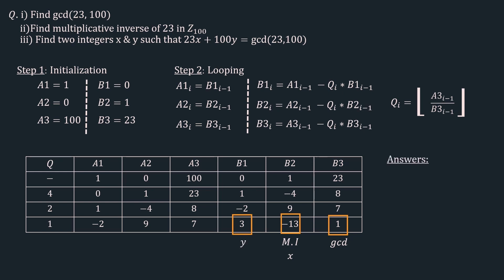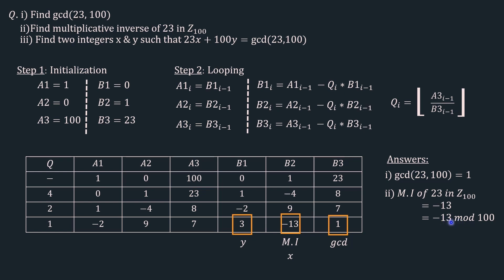Now let's note down all the answers. The gcd of 23 and 100 is the current value of b3, which is 1. The multiplicative inverse of 23 in Z_100 is the current value of b2, which is −13. Since all values in Z_100 should be from 0 to 99, we apply mod: −13 + 100 = 87. So mi(23) in Z_100 is 87. Finally, x = −13 and y = 3, satisfying 23x + 100y = gcd(23, 100). We answered all three questions using a single algorithm — the extended Euclidean algorithm.